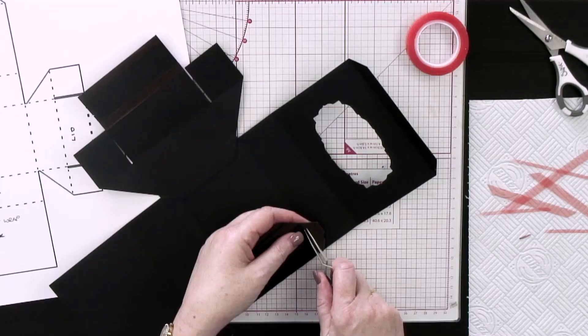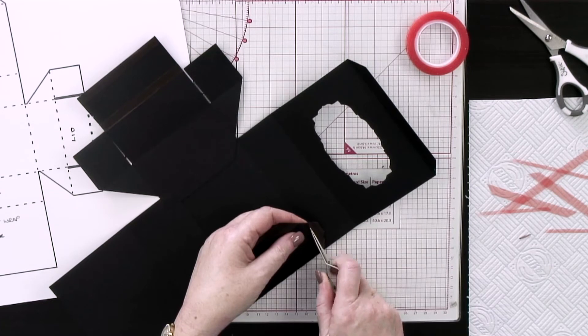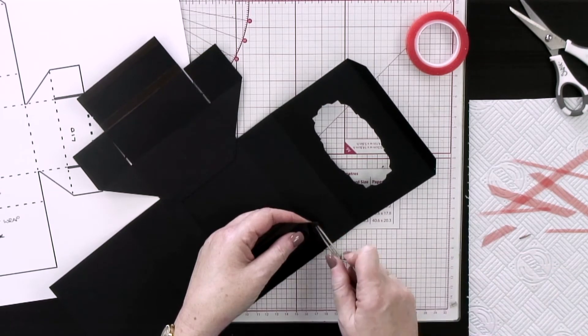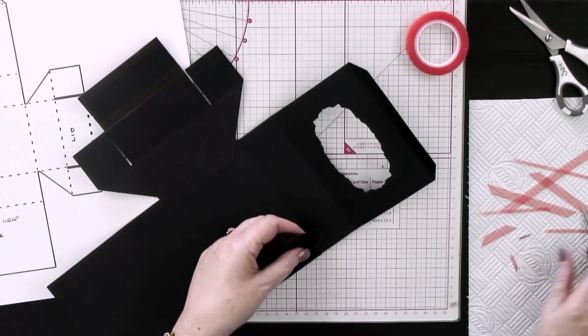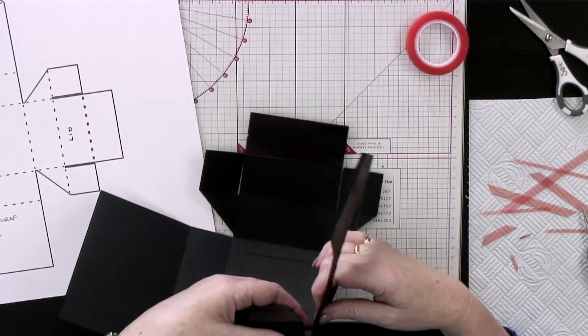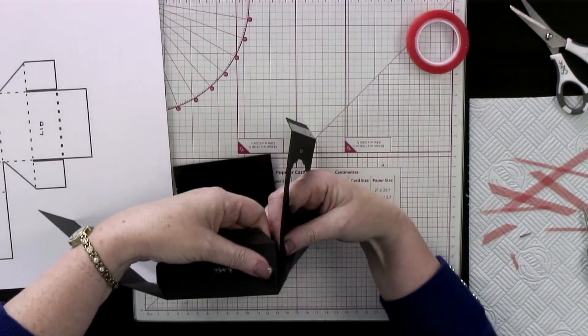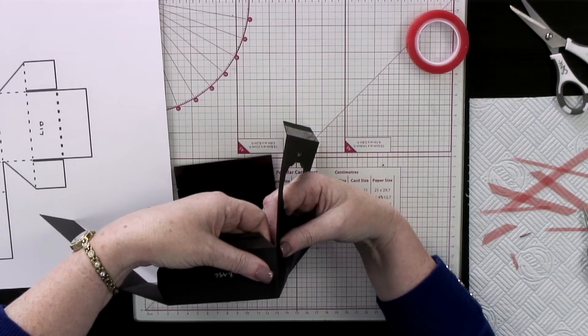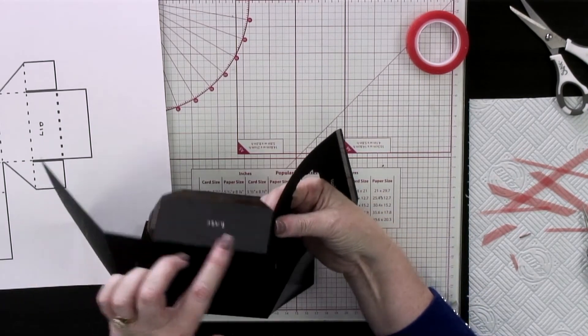I'm going to take the tape off this tab here. This is the fiddliest bit, getting the backing off here. That kitchen roll does help. Then I'm going to fold that tab in.